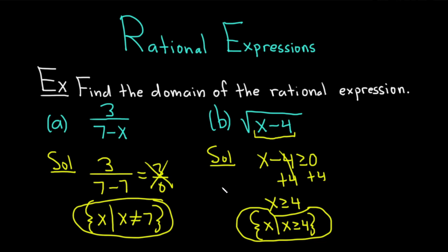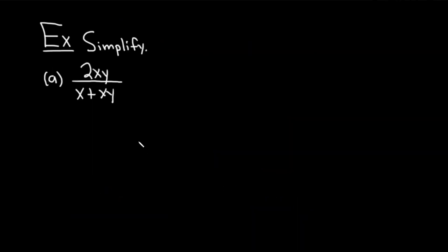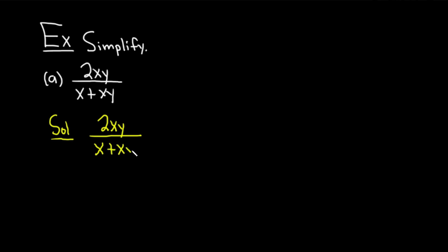Let's go ahead and do something a little bit different. In this next example, we're going to be simplifying. Part A, we have 2xy over x plus xy. You'll notice that on the bottom you have a common factor of x. Let's rewrite this and factor out that common factor. So this is 2xy divided by x plus xy, which equals 2xy divided by — pulling out that x — x times open parenthesis, then what times x gives x? Just 1. Then plus, what times x gives xy? y.